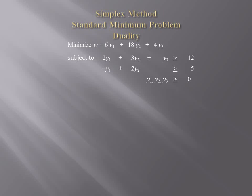This presentation will demonstrate how to solve a standard minimum problem using the method of duality. Notice that we've changed the variable z to w because we're going to be minimizing w instead of maximizing z.